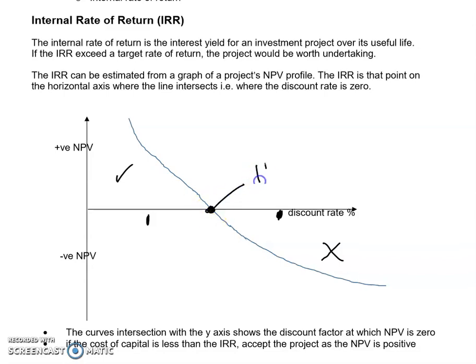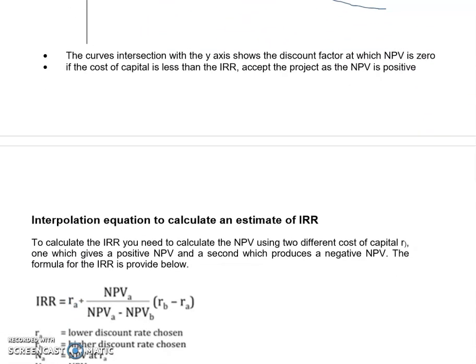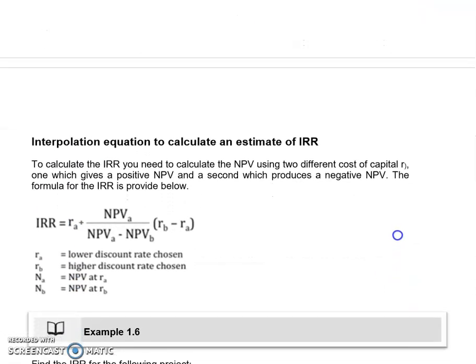Here is the internal rate of return. If our cost of capital is less, the project is worthwhile. If our cost of capital is greater, the project would have a negative NPV. Normally we wouldn't expect you to look at this in a graphical way — we can examine the whole problem using interpolation.